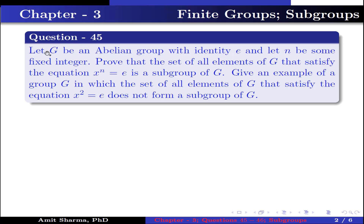Question number 45: Let G be an Abelian group with identity E, let N be some fixed integer. Prove that the set of all elements of G that satisfy the equation x to the power n equal to identity is a subgroup of G. Give an example of a group G in which the set of all elements of G that satisfy x squared equal to identity does not form a subgroup of G.